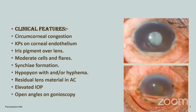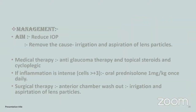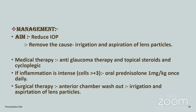Clinical features of phacoanaphylactic glaucoma: circumcorneal congestion, KPs on the corneal endothelium, iris pigment over the lens, moderate cells and flare, synechiae formation. Hypopyon with hyphema may be seen, but this is rare. When both hyphema and hypopyon are present, it is definitive of phacoanaphylactic glaucoma. Residual lens material in the AC, elevated IOP, and open angle on gonioscopy. Management: reduce IOP and remove the cause by irrigation and aspiration of lens material. If inflammation is intense, oral prednisolone 1 mg/kg once daily is prescribed, along with anterior chamber washout with irrigation and aspiration.